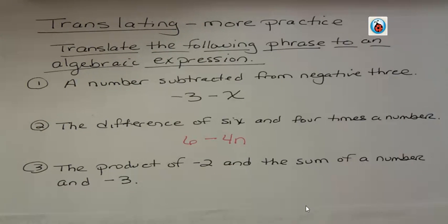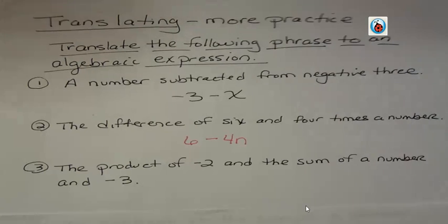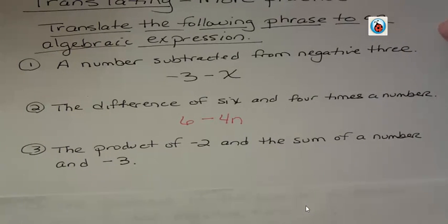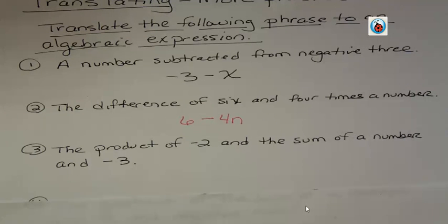All right. The product of negative two and the sum of a number and negative three. Well, we're talking about a product. So overall, we're talking about multiply. So we're going to multiply negative two times the sum.